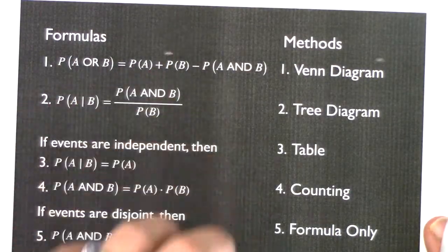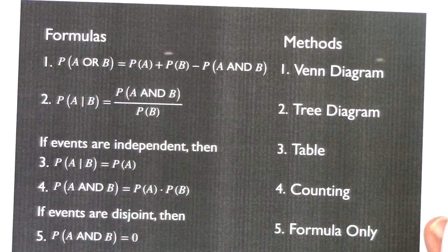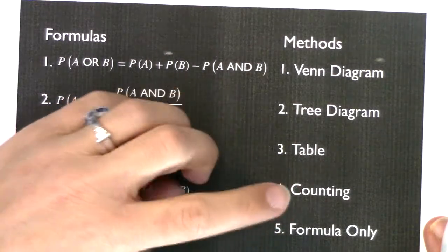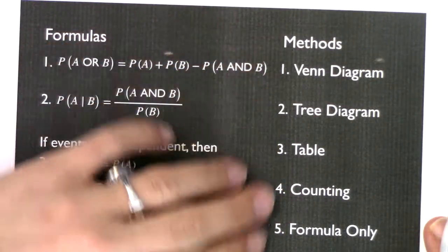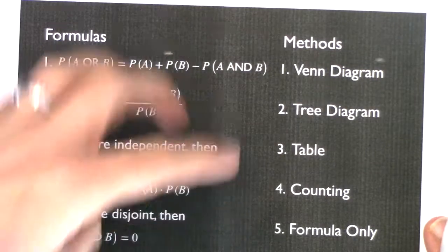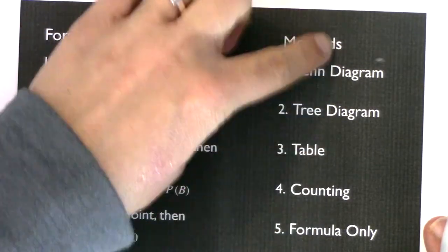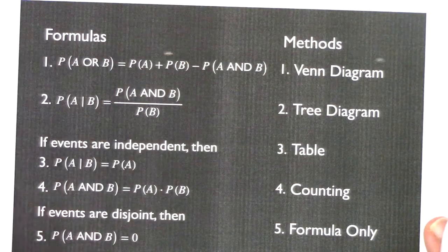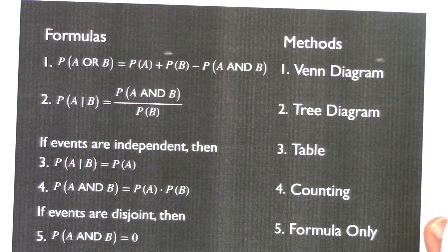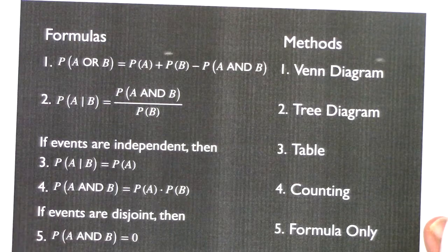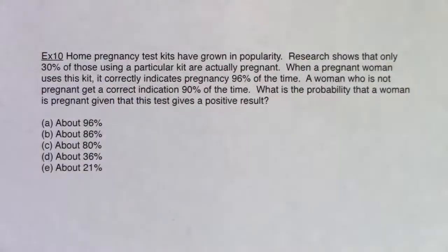So in a moment I'm going to read example 10, and then I'm going to talk about how we can eliminate some of these methods and narrow down which method it is, and then which formula I need. Because those are the skills you're going to want moving forward: when you read a problem, which method am I on, and which formula do I want? So let's take a look.